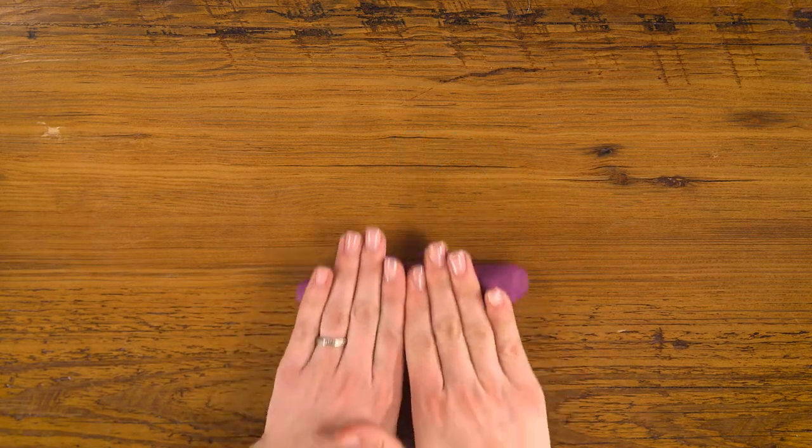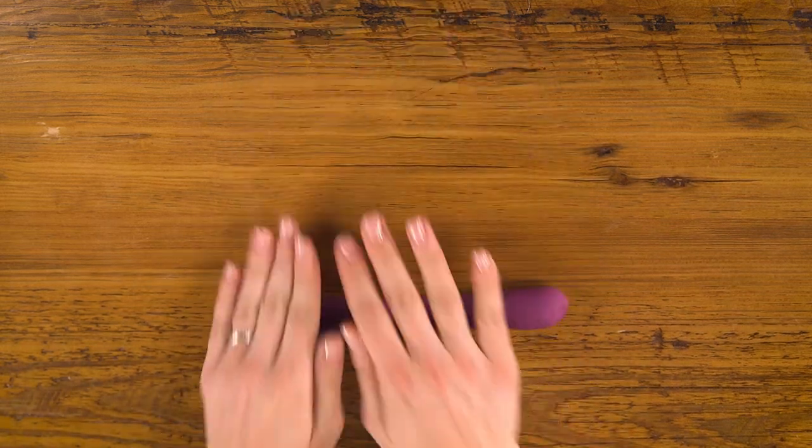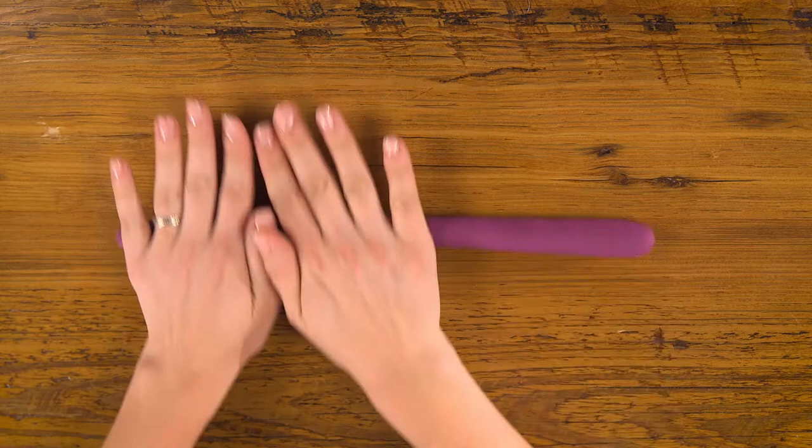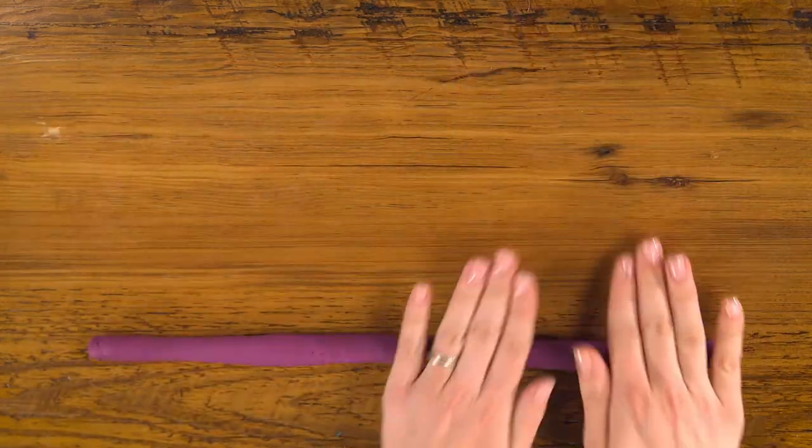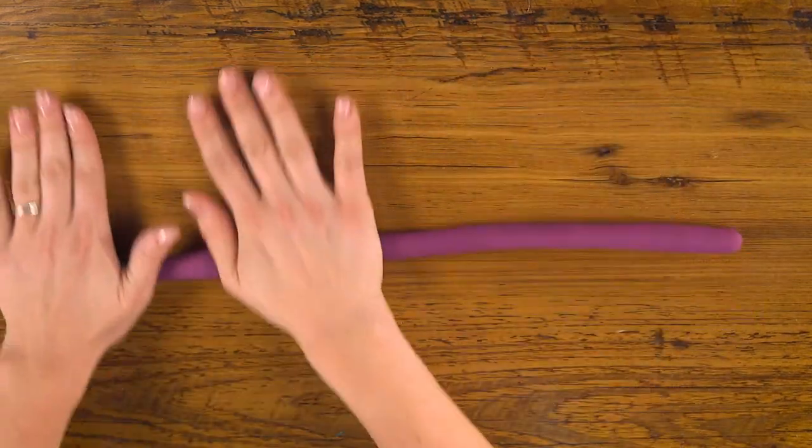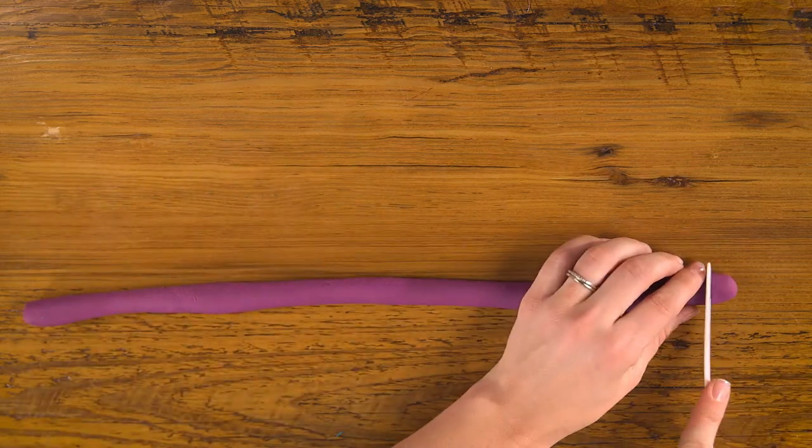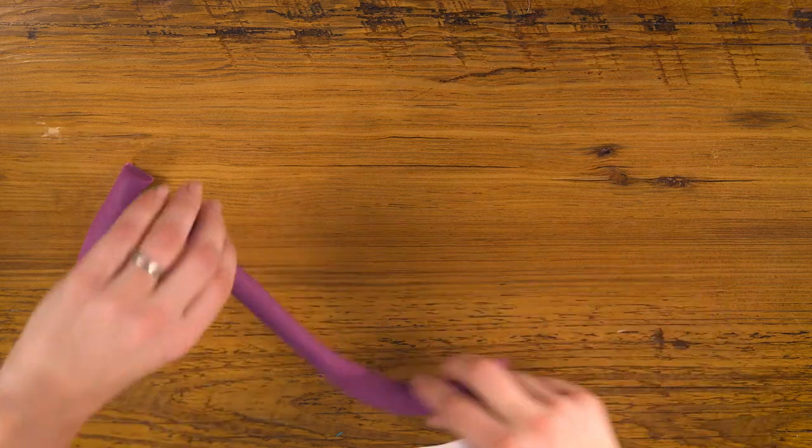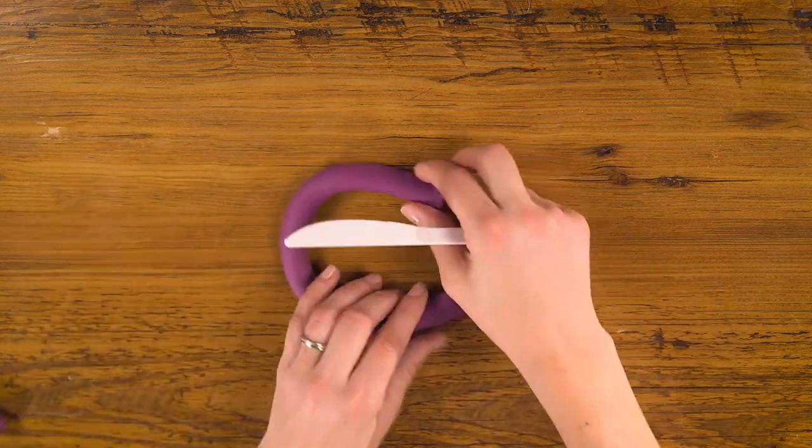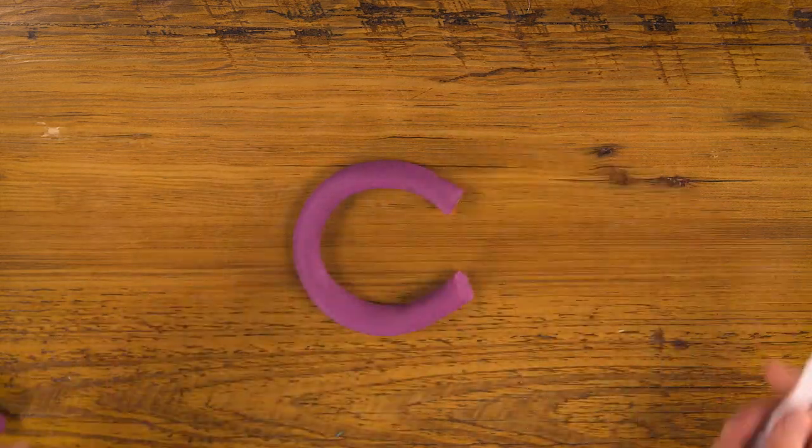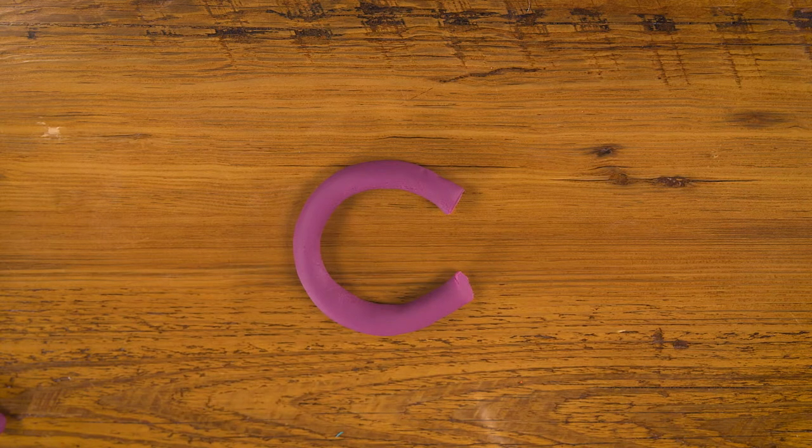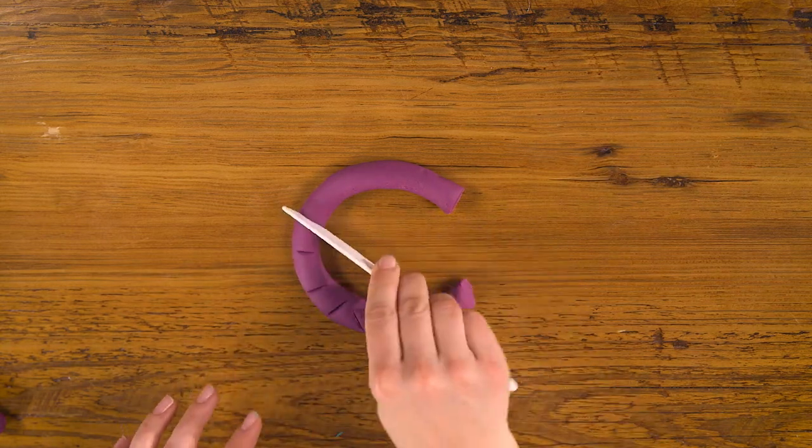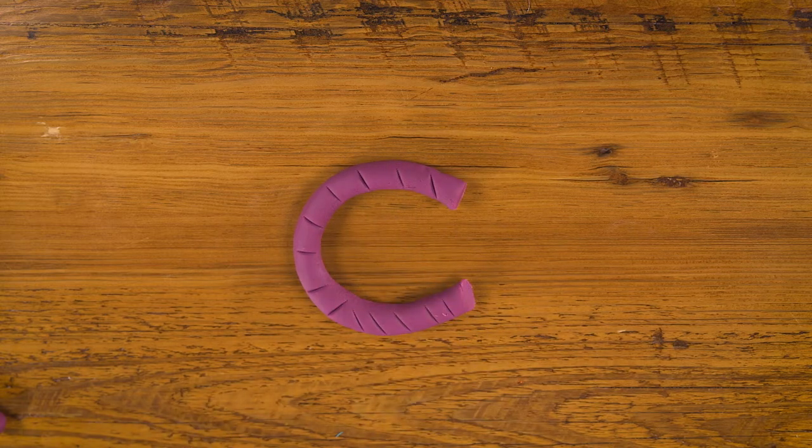C is next. To make the C, I'm going to do another rope with purple. Rolling it out, nice and even. Trim off one end. And there's a C. But it's not that interesting, so I'm going to use my knife to add little lines.